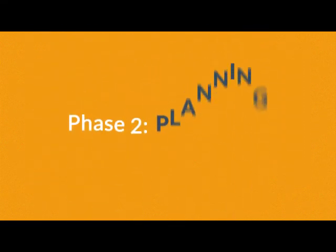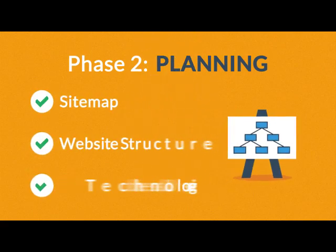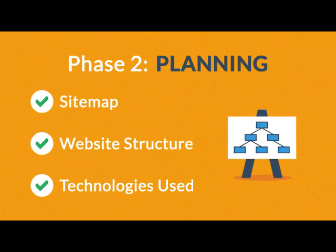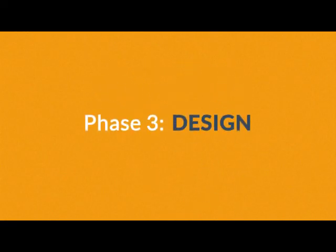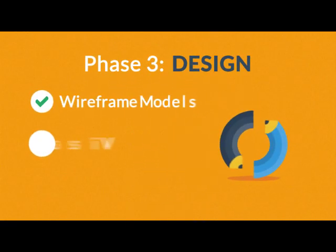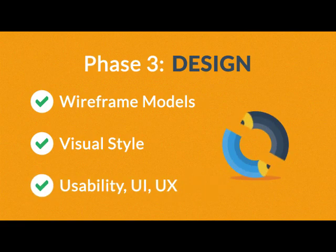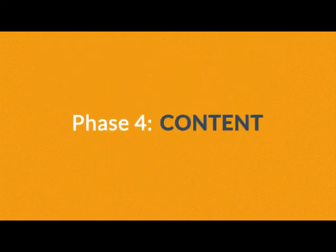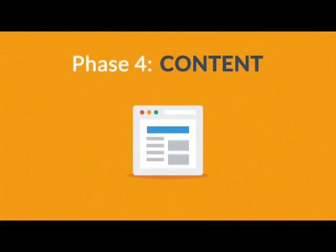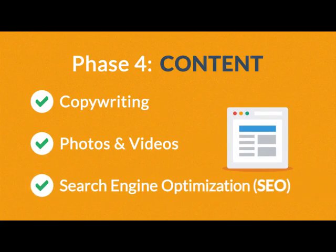Phase two: planning. A plan includes a definition of the site map structure and the technologies we're about to use. Phase three: design. Not only do we focus on wireframe models and their visual style, but also on the usability of the user interface for the best possible user experience. Phase four: content. A very important part of the process is choosing the right text, photos, or videos — all optimized not only for your visitors, but also for search engines.